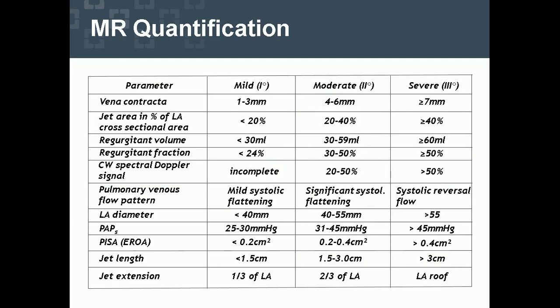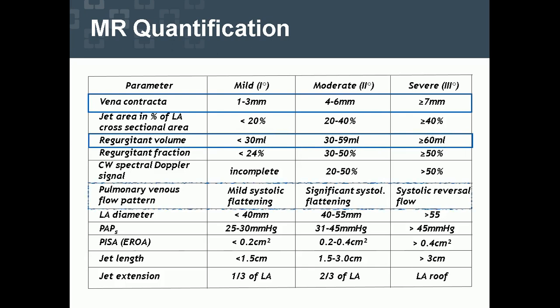How to quantify mitral regurgitation? Mitral regurgitation quantification is a multi-parametric approach, so we must select the most effective and valid parameters. These are: the vena contracta — simple but well-validated — the regurgitant volume, the pulmonary venous flow pattern, and the PISA-derived effective regurgitant orifice area. These four parameters are completely sufficient to quantify mitral regurgitation.